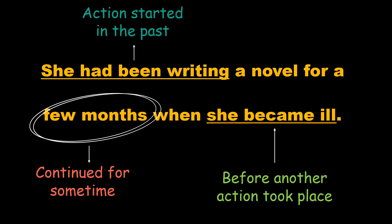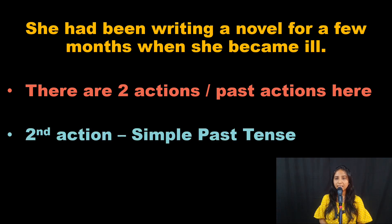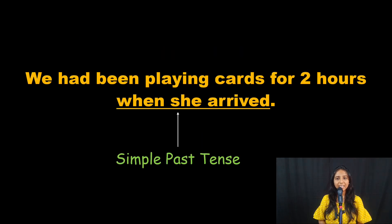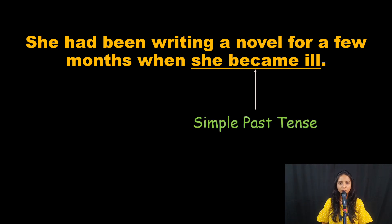So let's understand one thing: there are two past actions here. The second or later action is always going to be in simple past tense — and that is our trick. So which one is the later action? Which part of the sentence is in the simple past tense? Yes, it's 'she arrived' — it is the second action and it is in the simple past tense. And in the second sentence, the later action is 'when she became ill'.